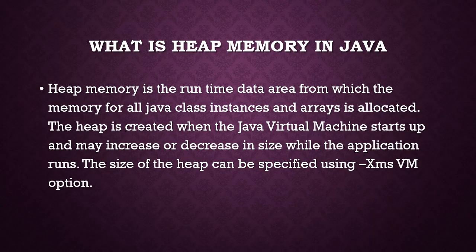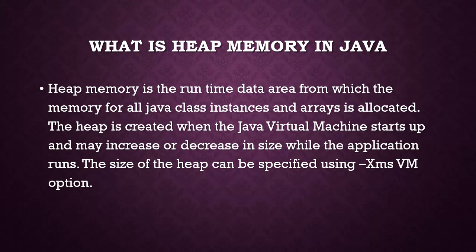What is heap memory in Java? Heap memory is a runtime data area from which memory for all class instances and arrays is allocated. The heap is created when the JVM starts up, and may increase or decrease in size as the application runs. The size of the heap can be specified using the -Xms JVM option.